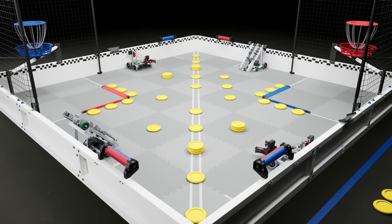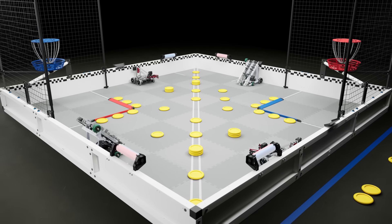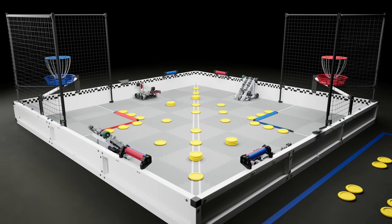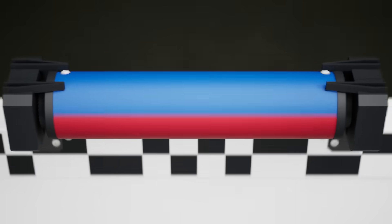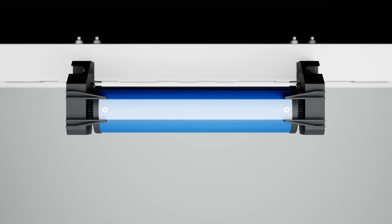In addition to launching discs, robots can also spin the four rollers mounted to the field perimeter. Rollers are 250mm long and 60mm in diameter. If the area inside of a roller's pointers only shows one color, then that roller is considered owned by that alliance. Each owned roller is worth 10 points.